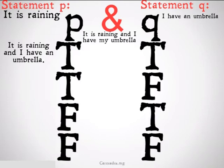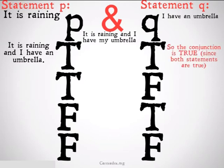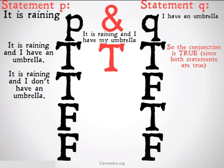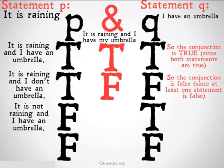Well, let's see. In the first case, it is raining and I have an umbrella. Clearly the conjunction is true, because that's just the statement we want to say — both of the statements that are part of the conjunction are true. In the second case, it is raining and I don't have an umbrella. The conjunction is false since at least one of the statements is false.